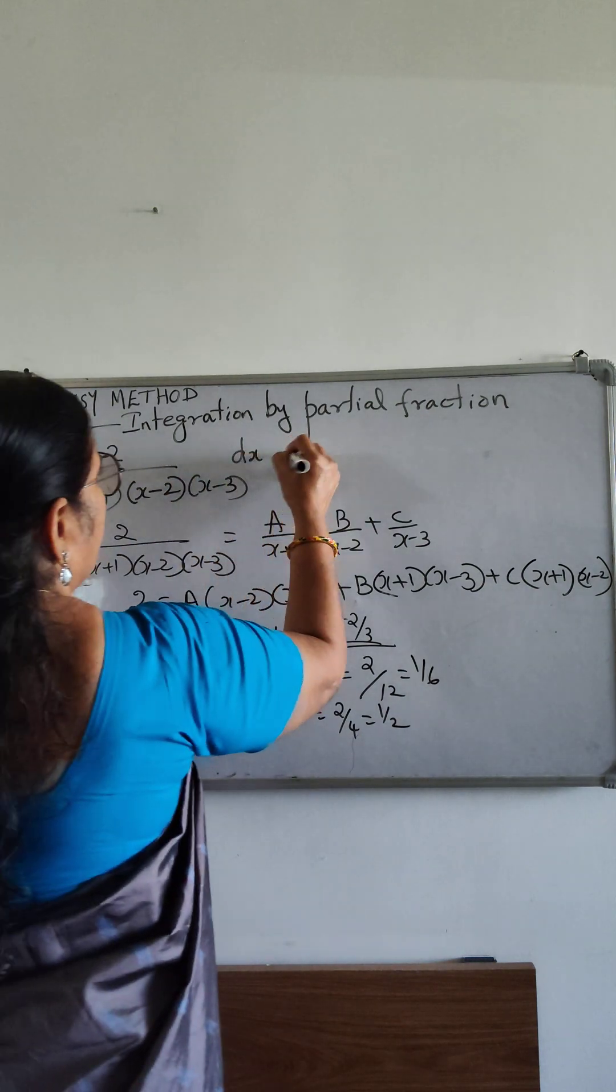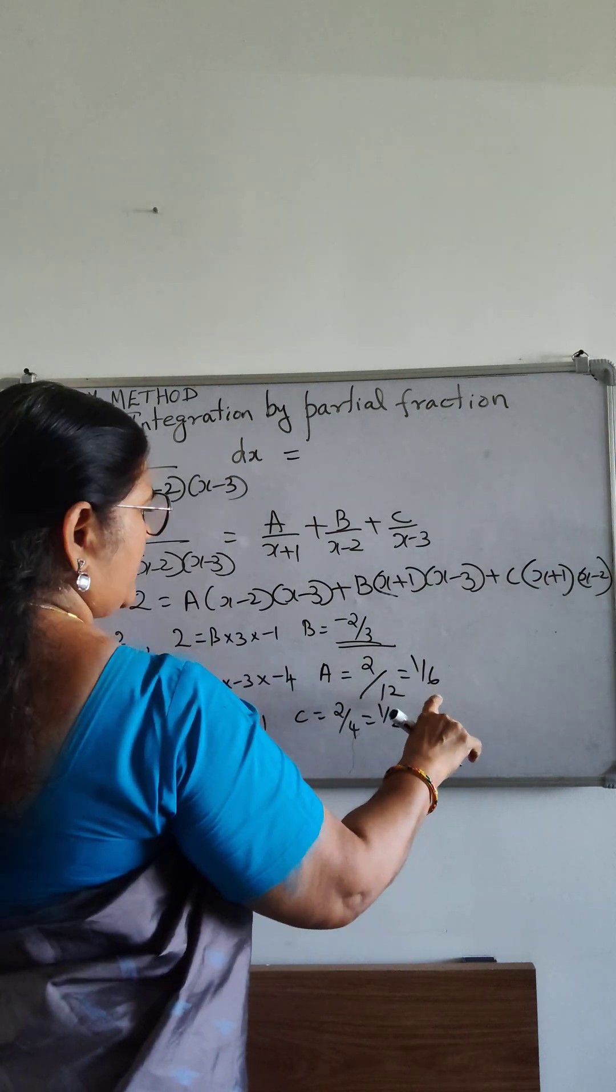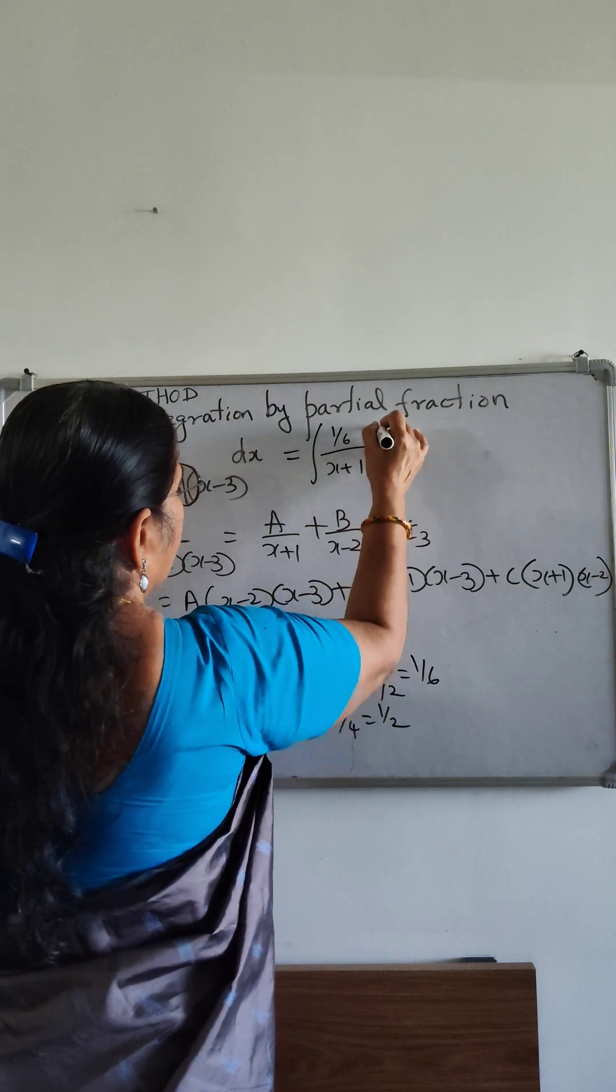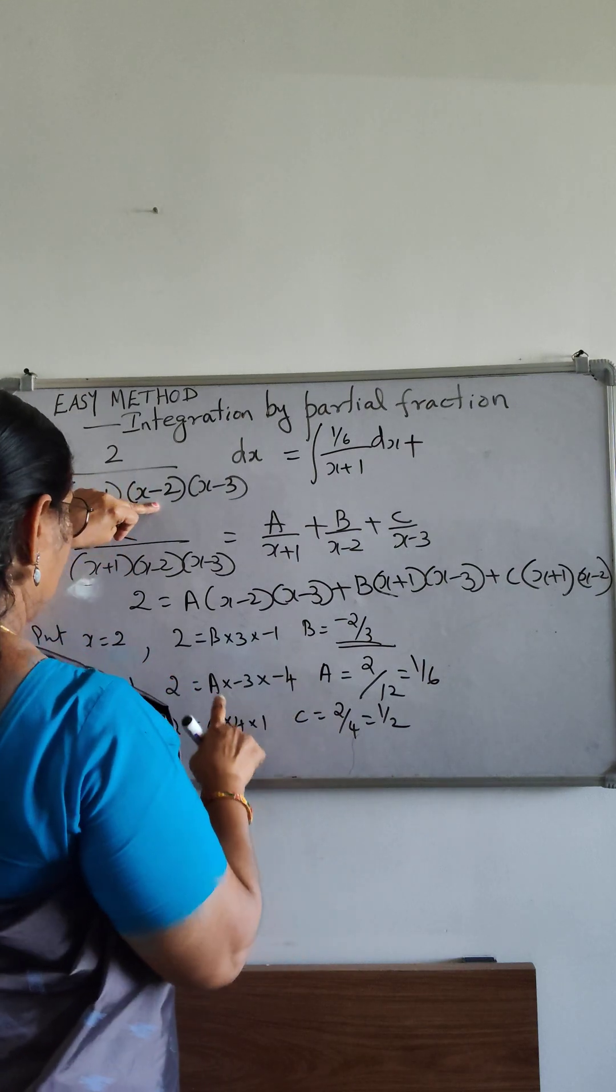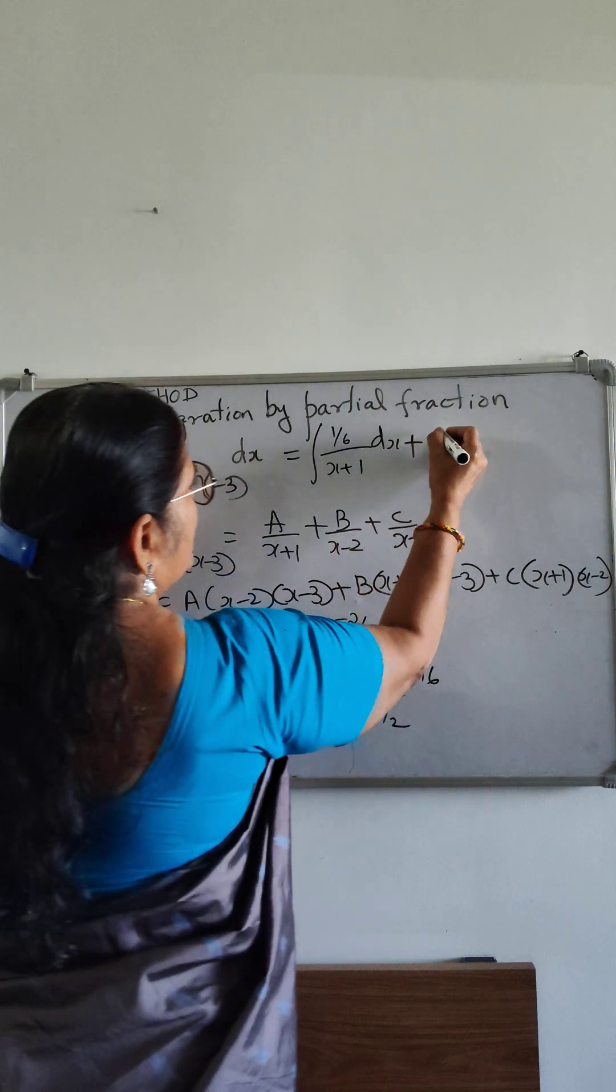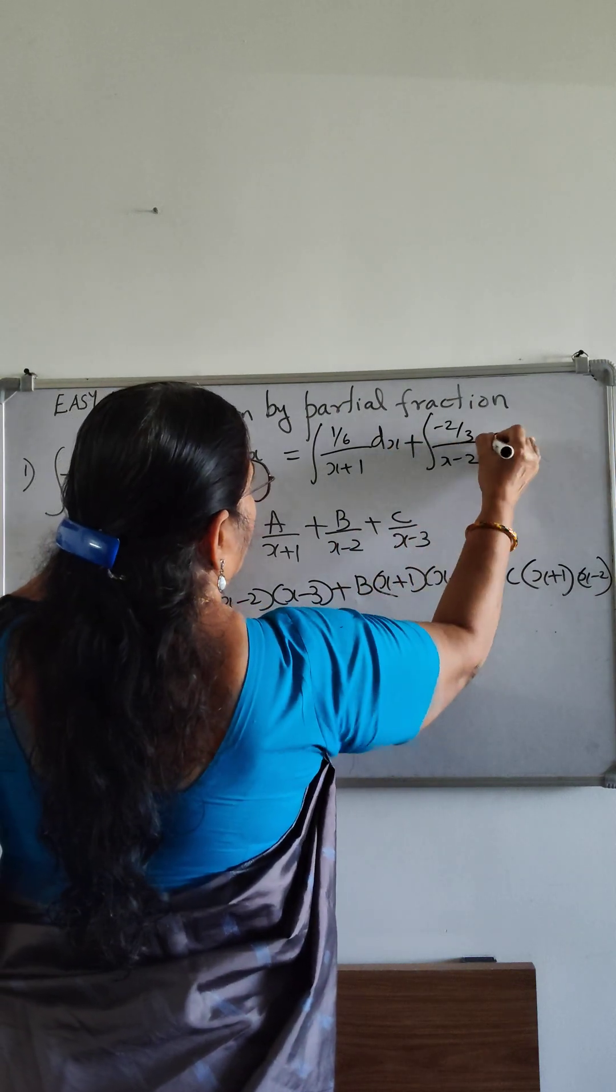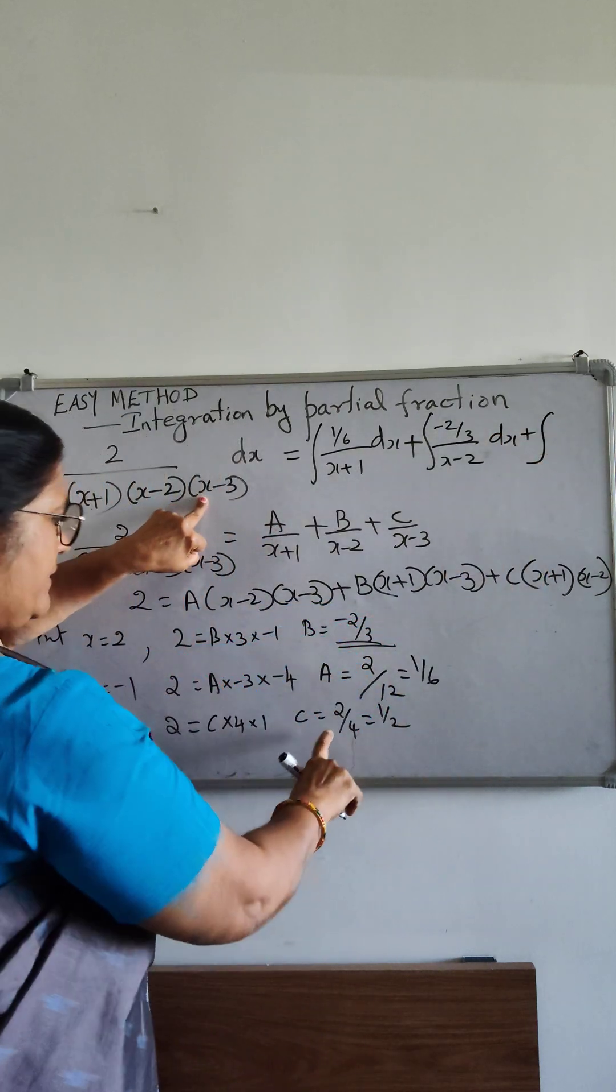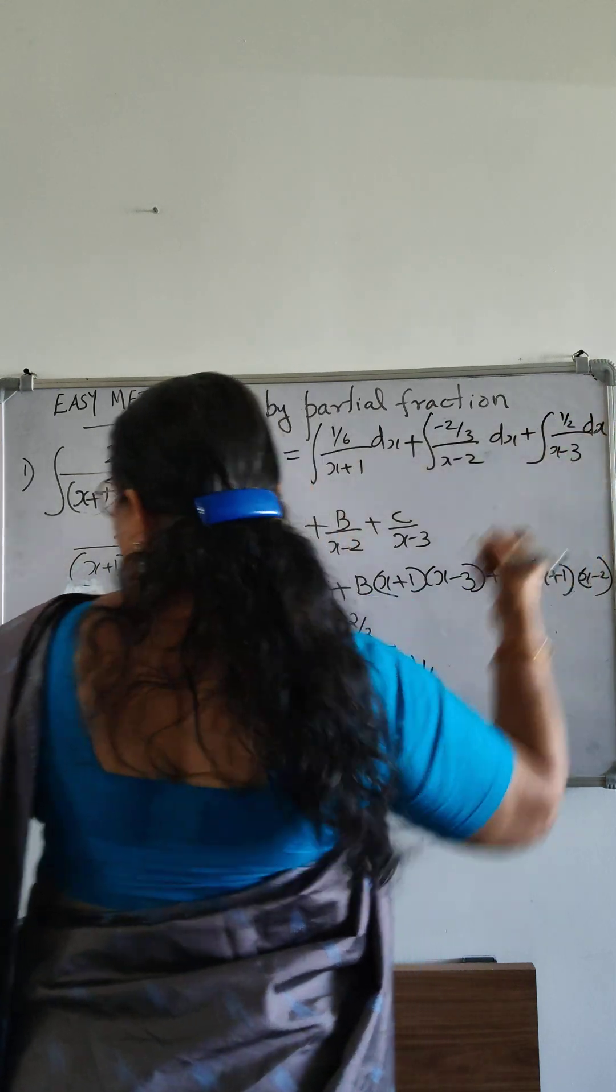Then this integral can be written as a by x plus 1, 1 by 6 by x plus 1, b by x minus 2, b is minus 2 by 3 by x minus 2 plus c by x minus 3, 1 by 2 by x minus 3 dx.